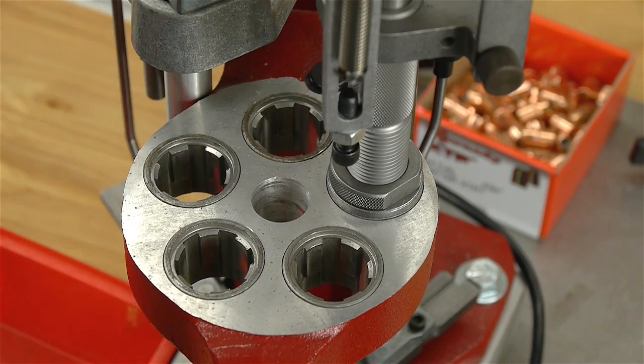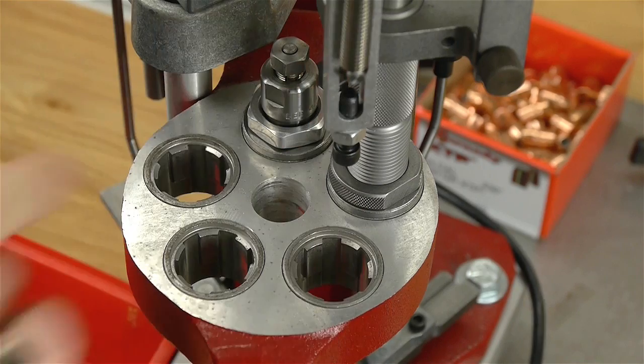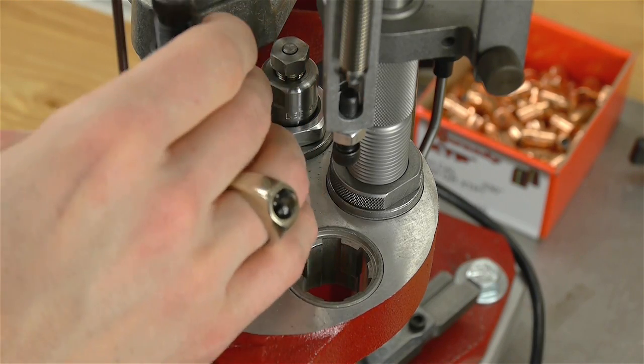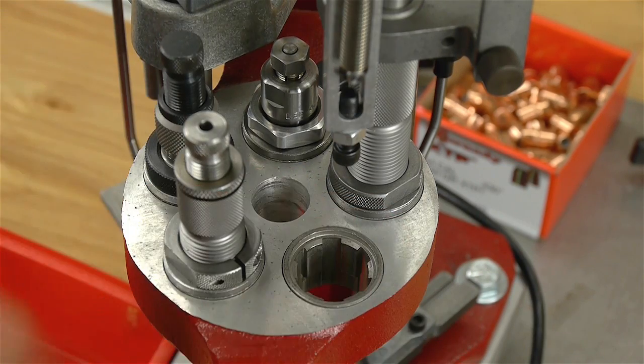So literally we can take our dies, remove them, insert them. And here, like I mentioned, we're using separate crimp and seat stations which is nice because